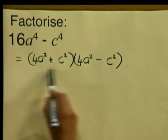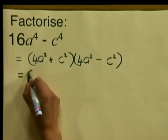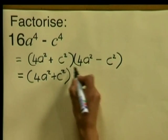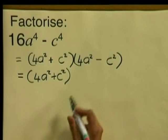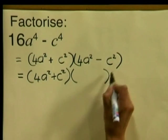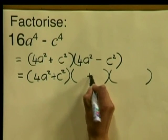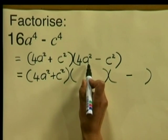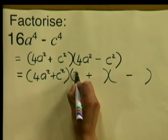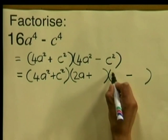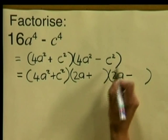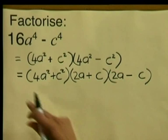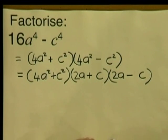We can't do anything further with the first bracket, so we rewrite it as 4a squared plus c squared. For the difference of two squares bracket, we put down two brackets with a plus sign and a minus sign. We find the square root of 4a squared, which gives us 2a, and write that in the first place in each bracket. Then the square root of c squared is c, and we write that in the second place. This is our expression fully factorized.